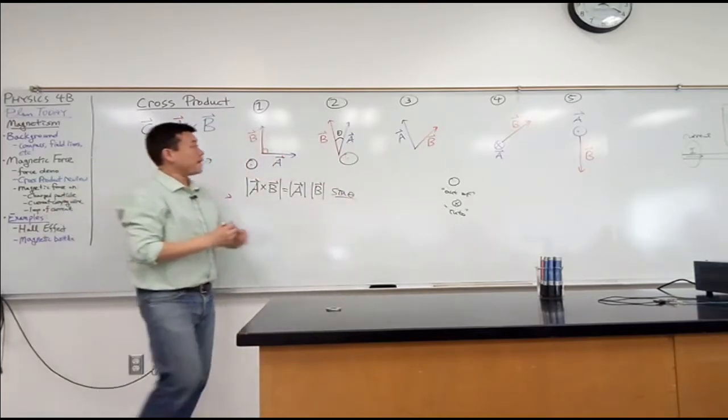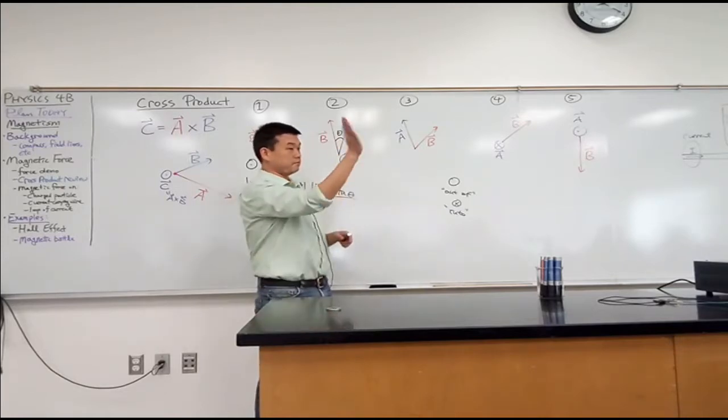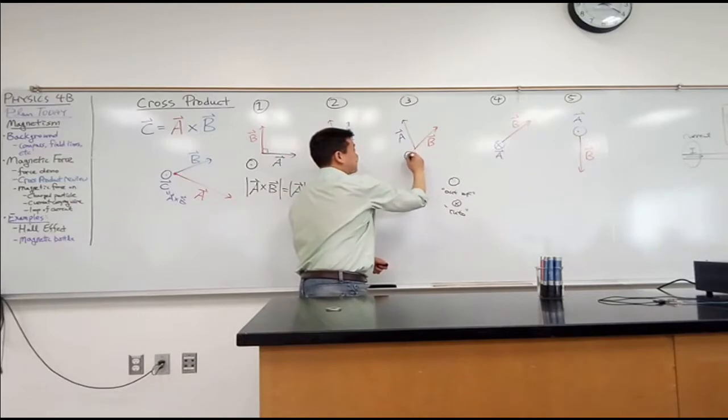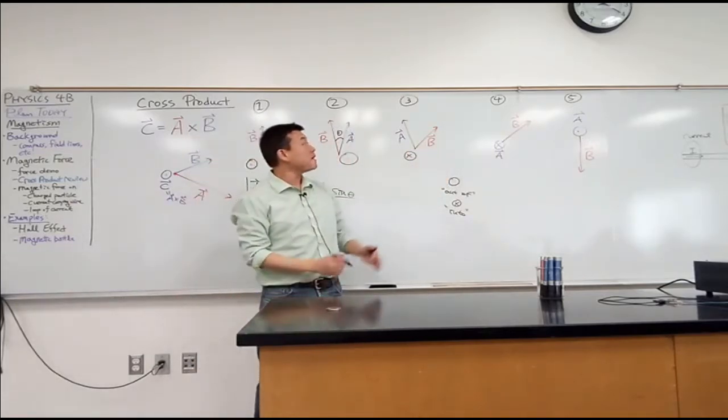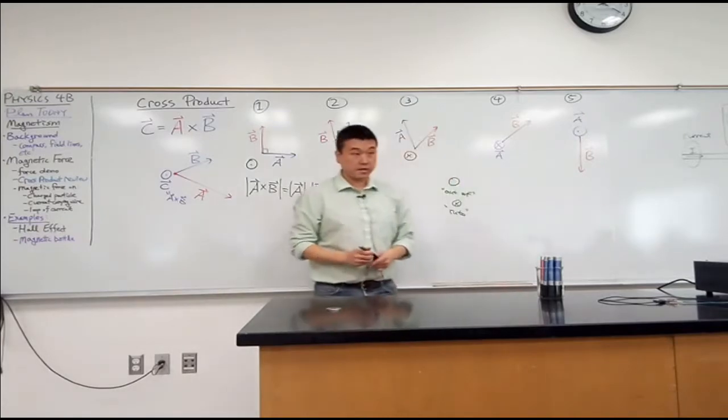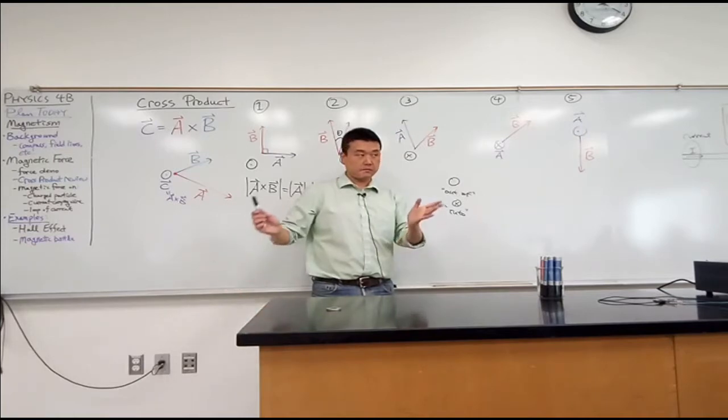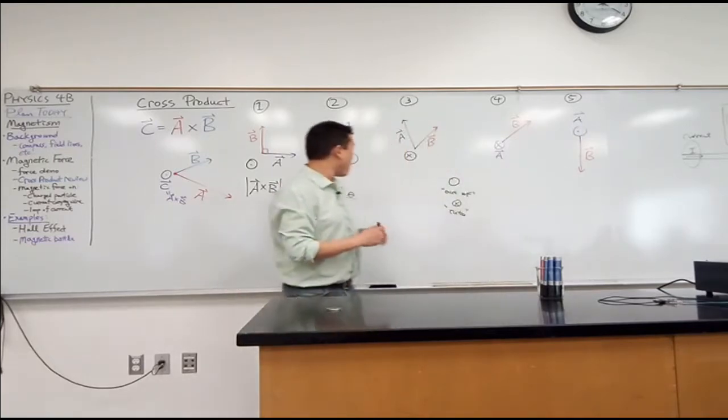So what about A cross B here? Into, yeah, you sort of find your way, A cross B. So it goes into the board. If you got one through three correctly, then you're on a good step. Four and five are going to be challenging because you have to think three-dimensionally. Before I give you a couple more minutes, let me just give you a hint.